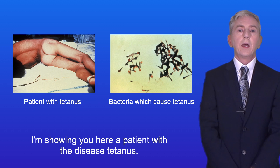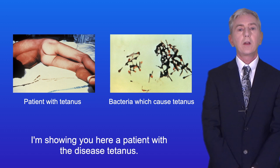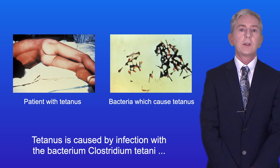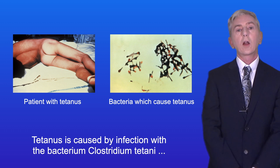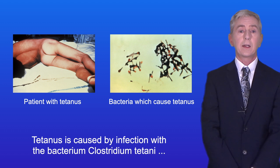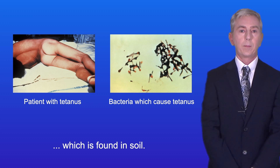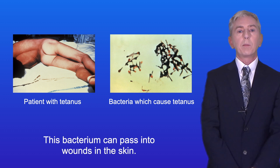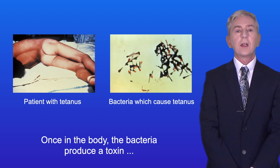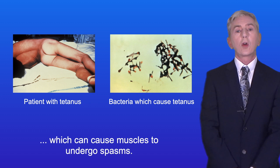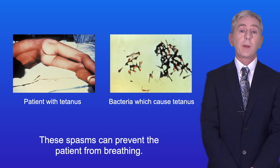Here is a patient with the disease tetanus. Tetanus is caused by infection with the bacterium Clostridium tetani, which is found in soil. This bacterium can pass into wounds in the skin. Once in the body, the bacteria produce a toxin which can cause muscles to undergo spasms, and these spasms can prevent the patient from breathing.